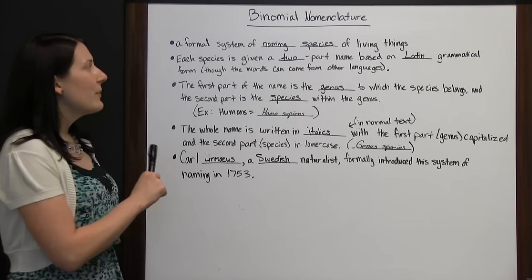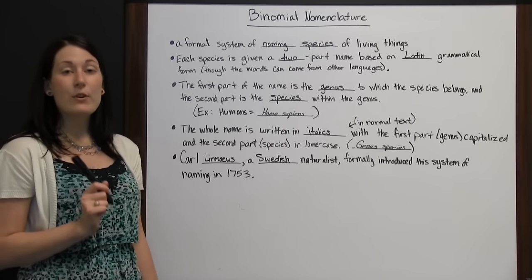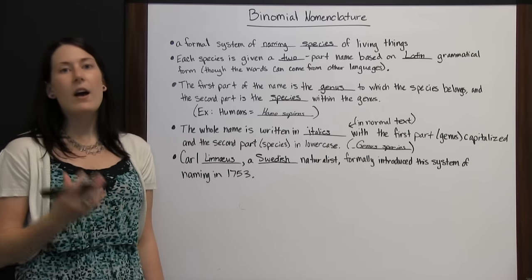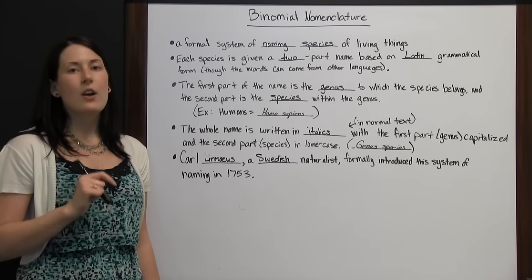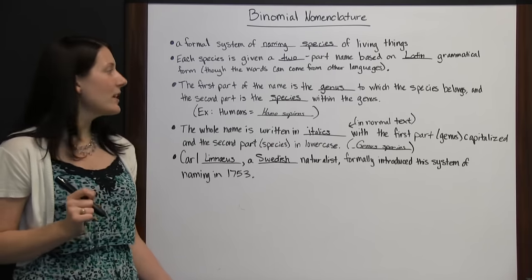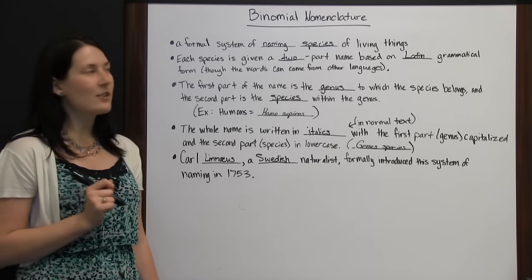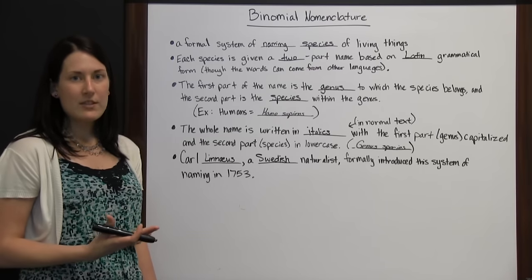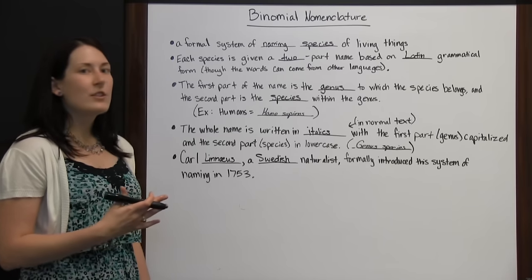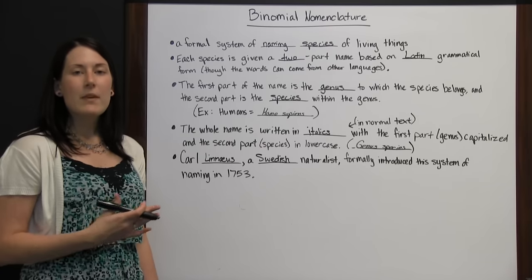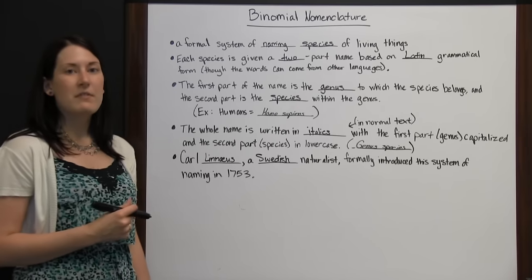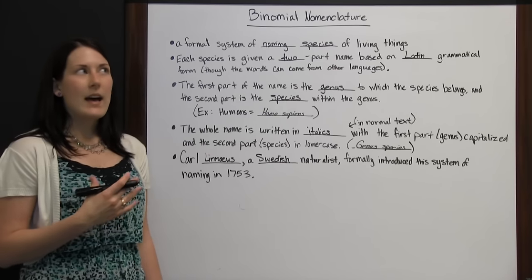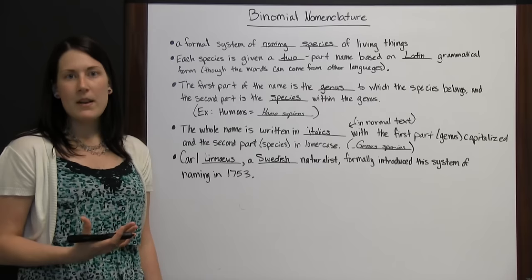But with this two-part naming system using binomial nomenclature, they'll all have the same scientific name, and you'd be able to confirm you're discussing the same species. All over the world, scientists can communicate and identify which species they found because they all use the same formal naming system. This also eliminates confusion with creatures that share the same common name.